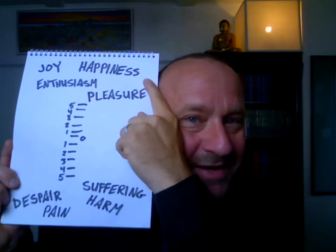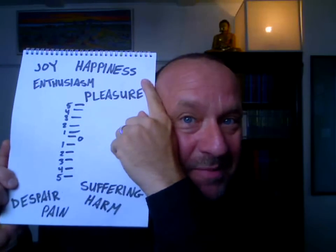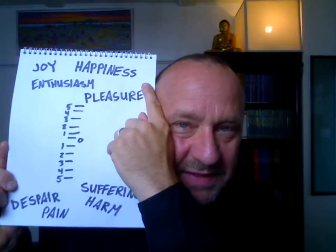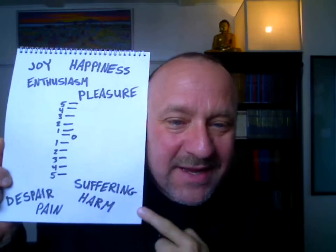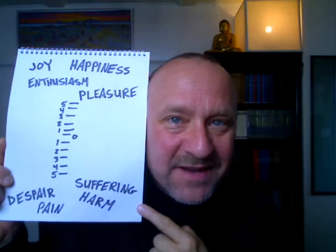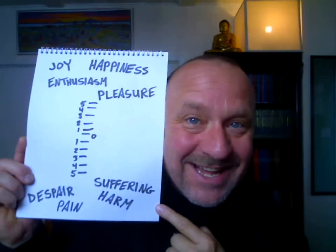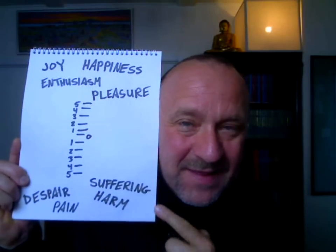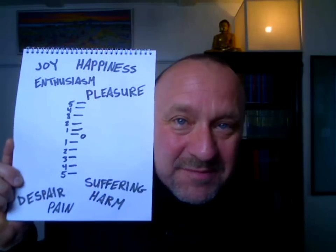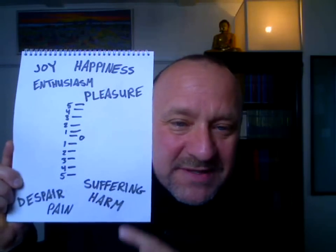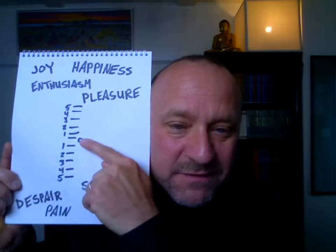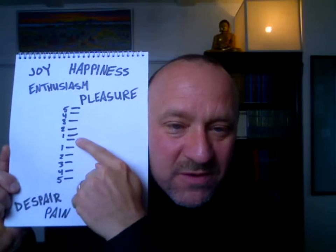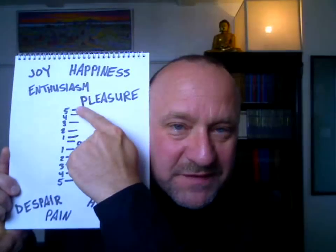Up here we've got all the positive states that one can be in, or at least you get the idea as to what I'm talking about. Down here we have the negative states that one can be in. You can pretty much see where I'm going with this, and not only that — here's 0, 1, 2, 3, 4, 5 and 0, 1, 2, 3, 4, 5.